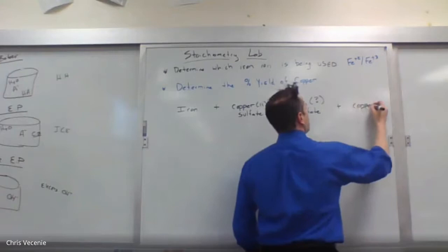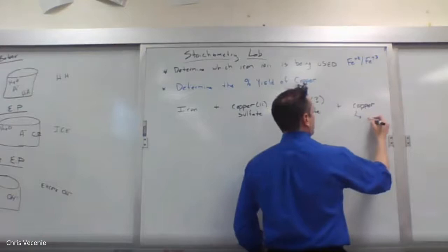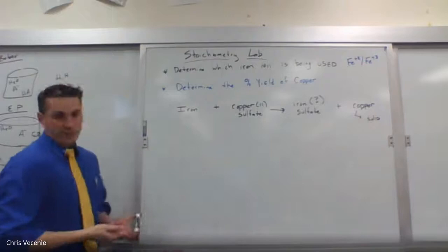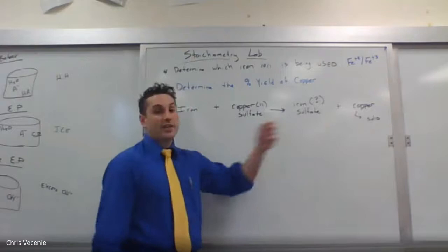The copper is what we are able to isolate and measure because it's a solid. The iron sulfate is soluble — it dissolves — so we can't measure it directly. But that doesn't mean we can't figure out which version of iron we're working with.